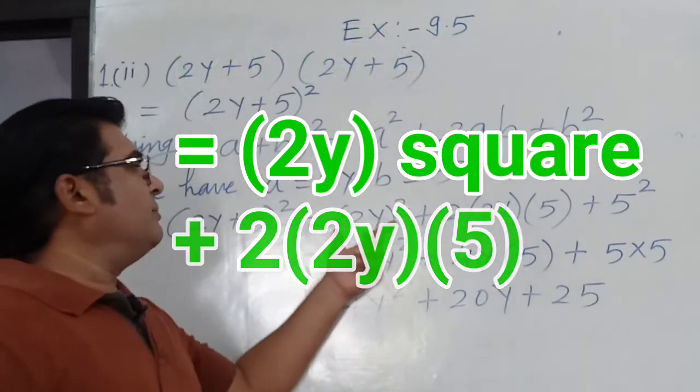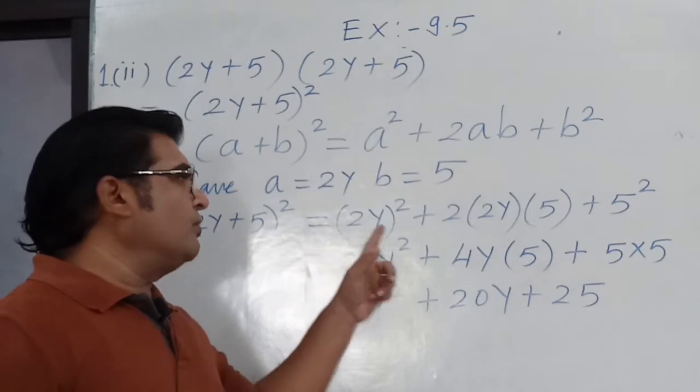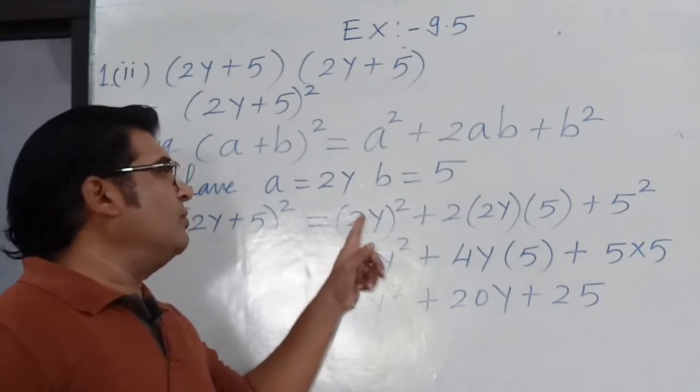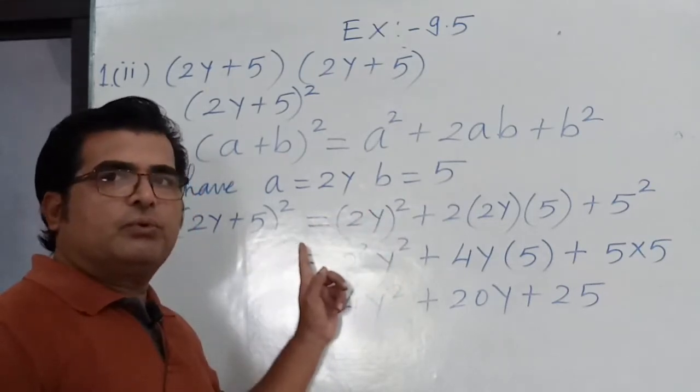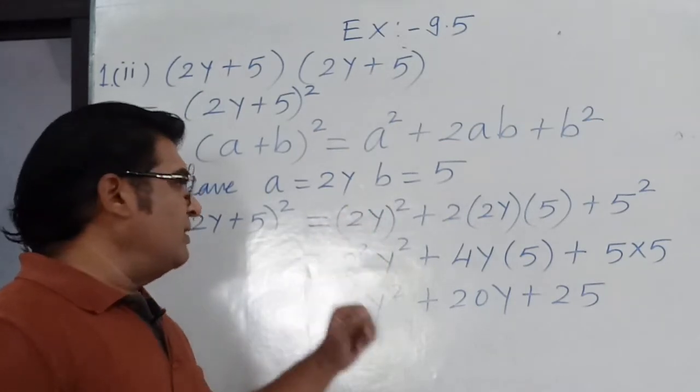You should remember, 2y is necessary to write in bracket, then whole square. If you do not put bracket, then it is only square of y, not of 2. But when you put the bracket, it is square of 2 as well as square of y.